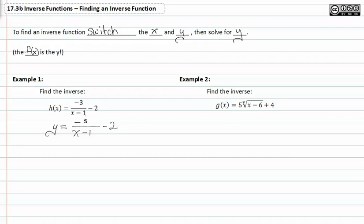We're going to switch the x and the y. So now we have x is equal to negative three over y minus one minus two.